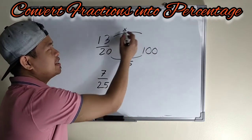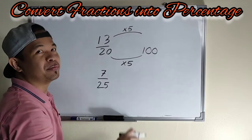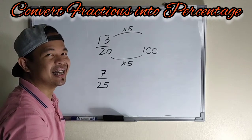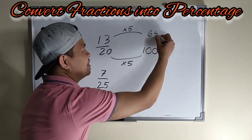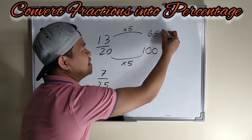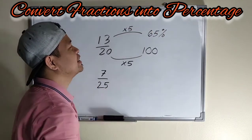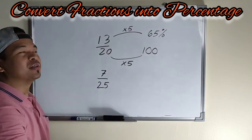13 times 5 is, ilan? 65. Ayan. So this is our percentage of 13 over 20.